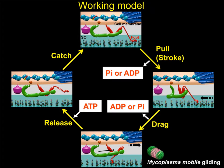The direct energy source of this system is known to be ATP, based on a permeabilized cell system named the Gliding Ghost. This slide shows our working model to explain the gliding mechanism: the force generated by the internal structure using ATP transmits to the surface, drives the legs, and then pulls the cell forward.